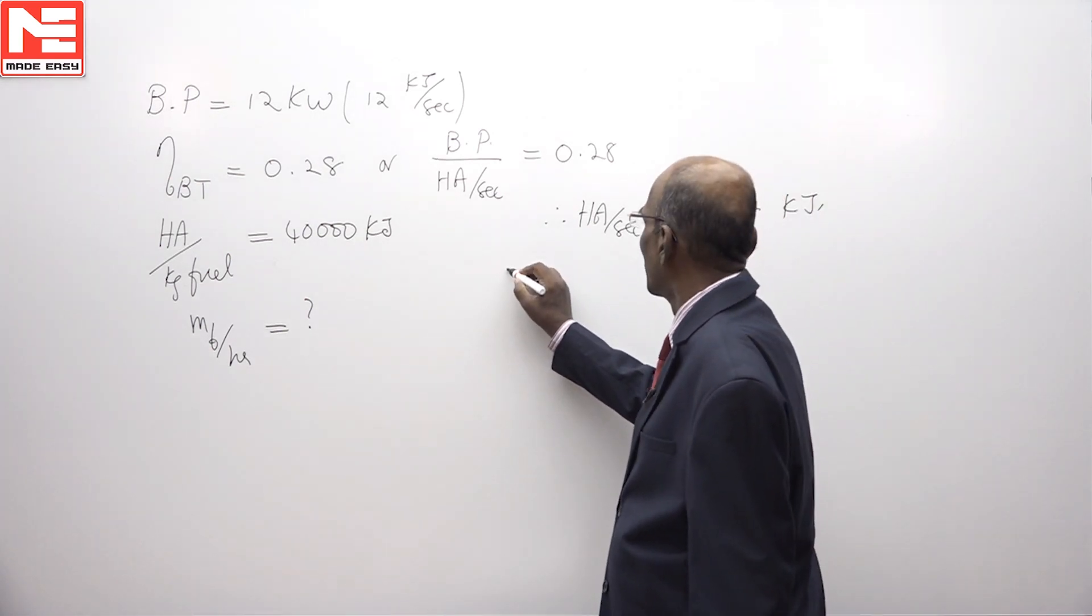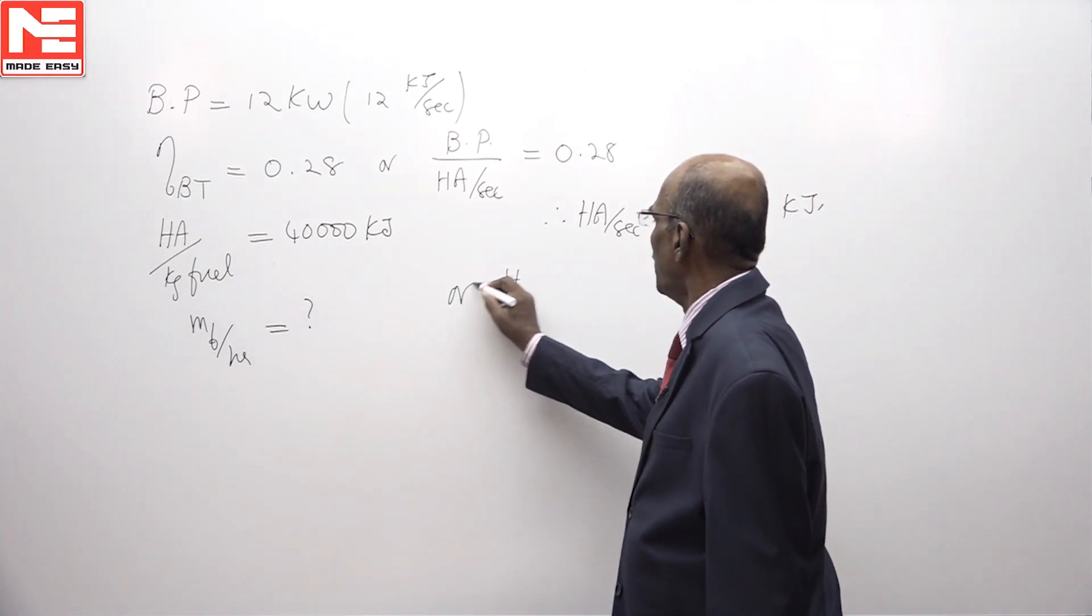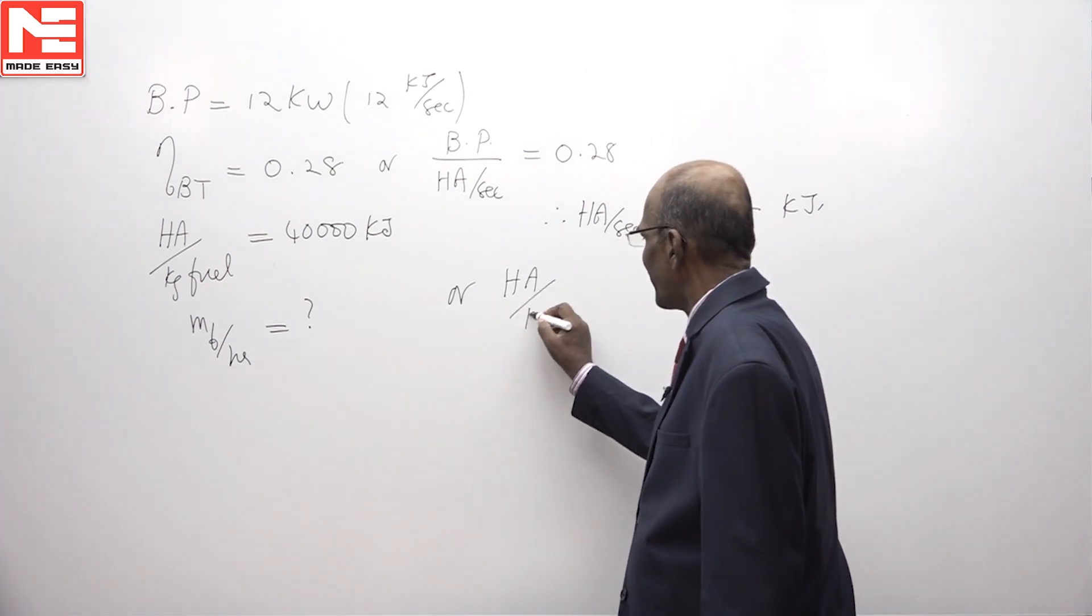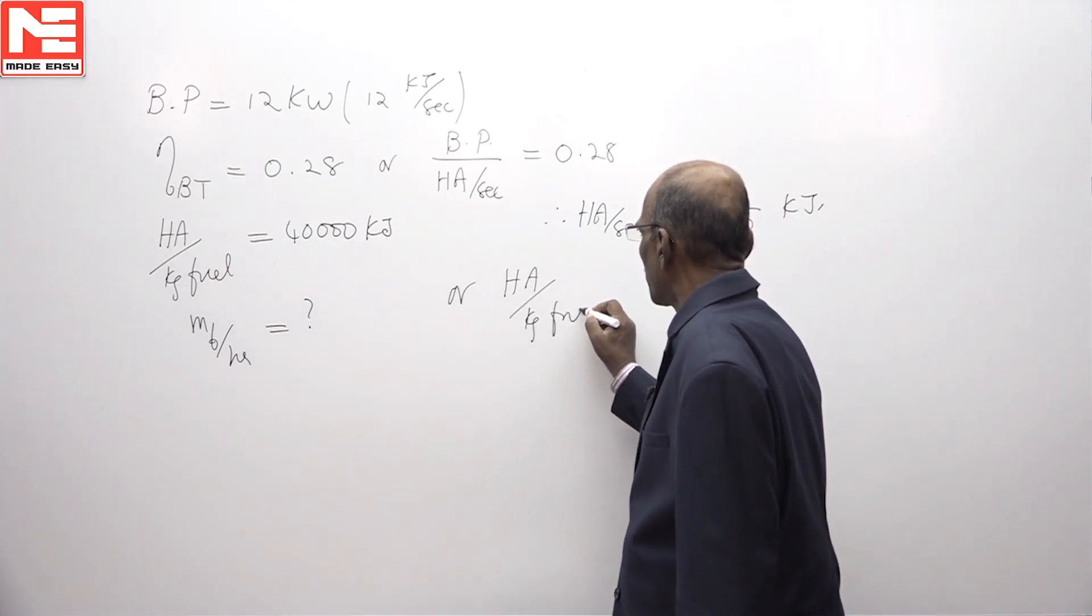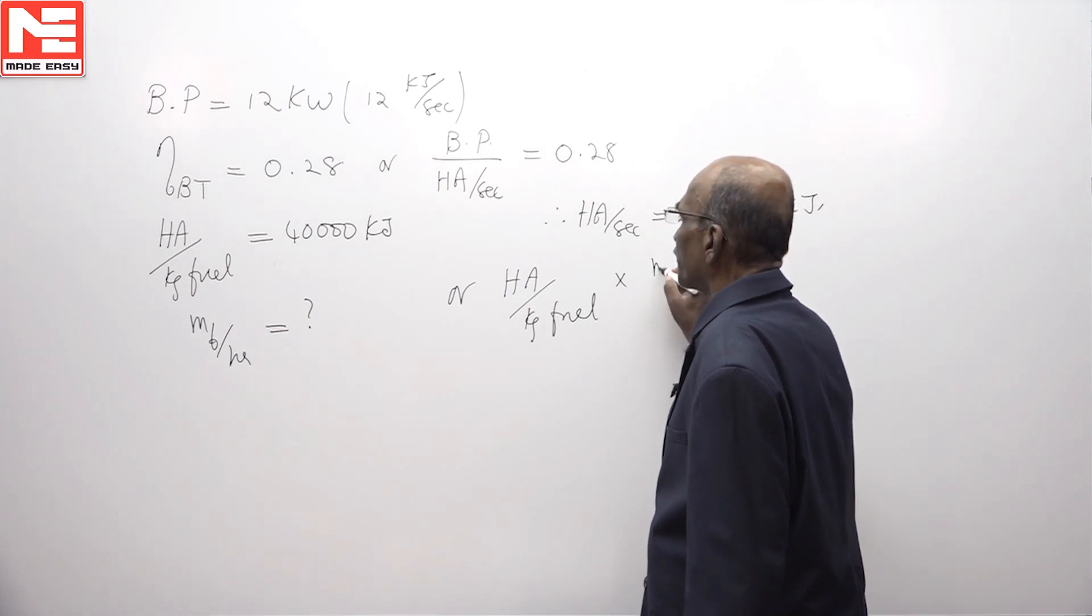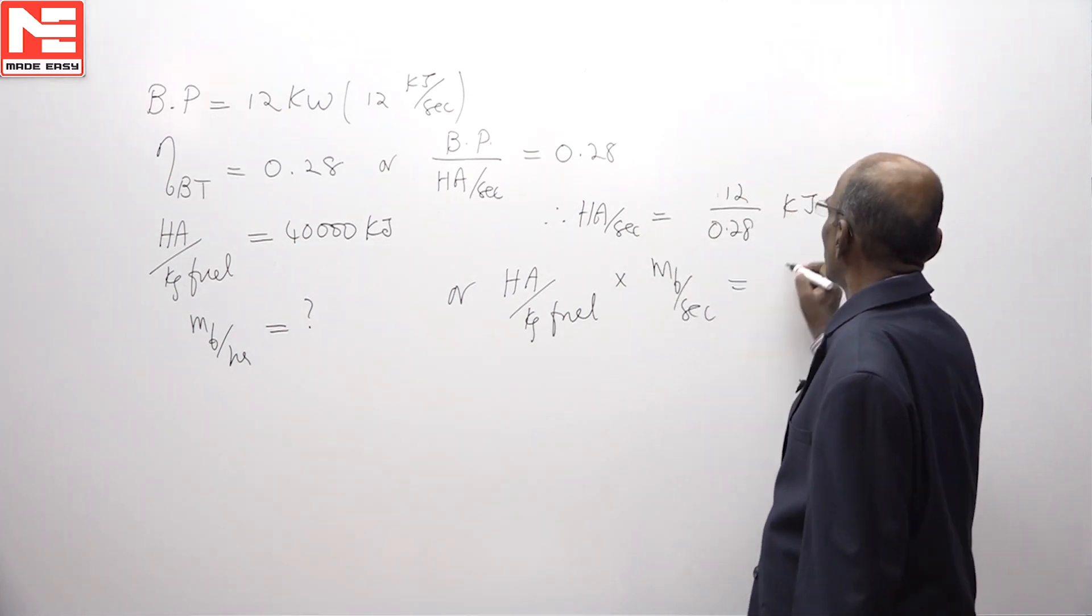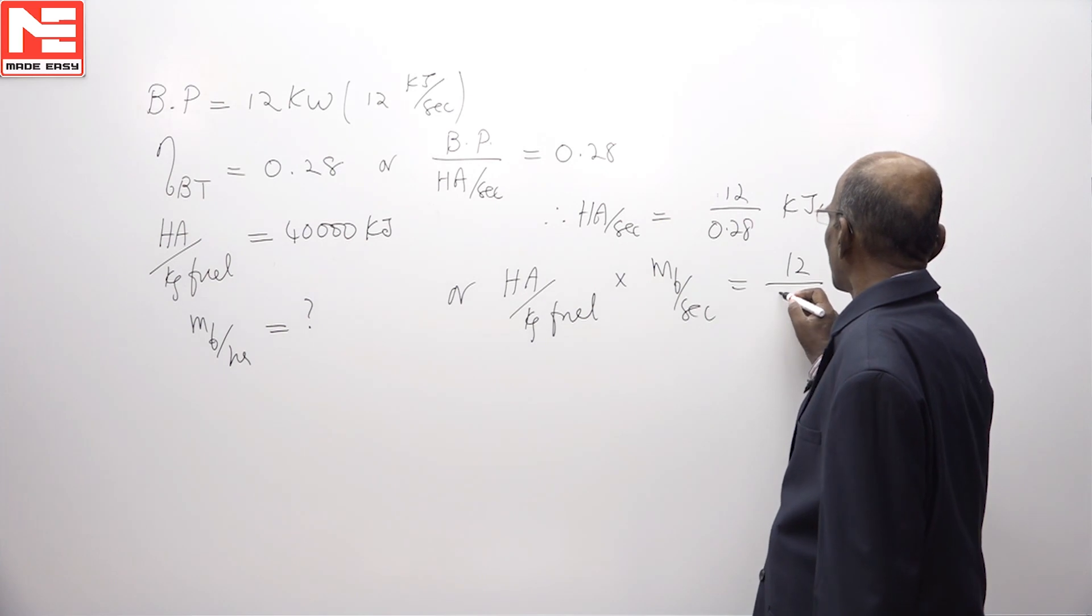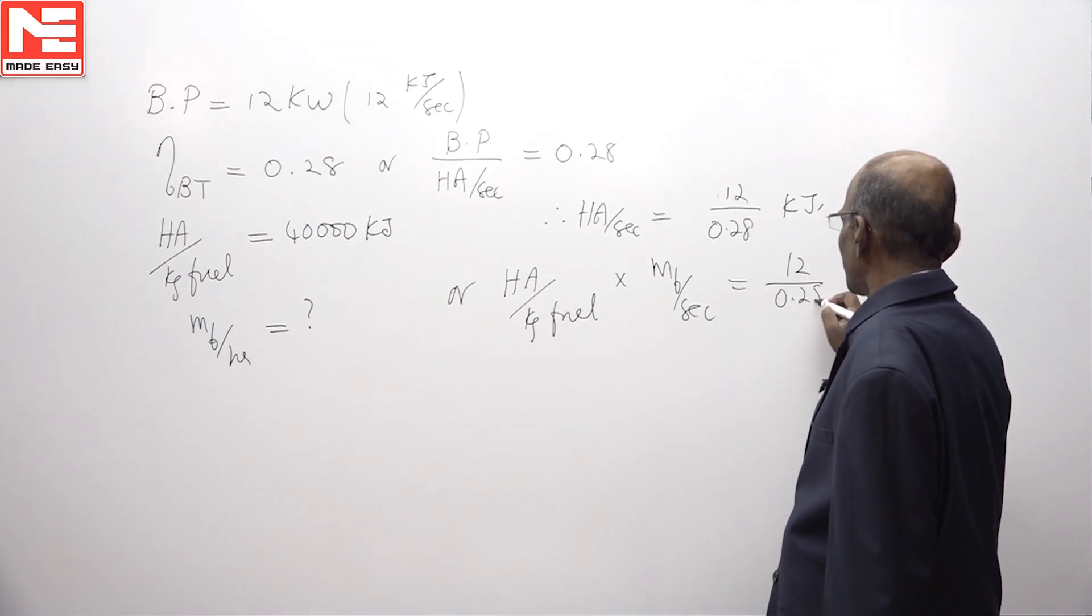The equation for heat added per second is heat added per kg of fuel into the mass of fuel per second. So from this equation, we will be able to get the mass of fuel per second.